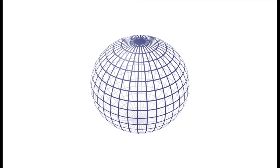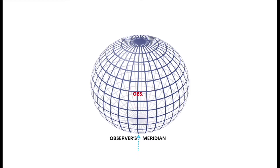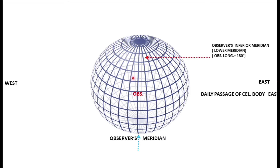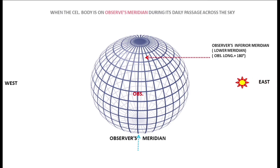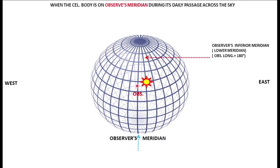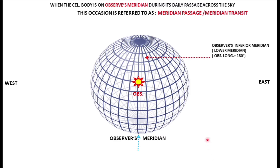We know that the Earth has got two motions — it revolves and rotates. Because of the rotation, we see that the body is rising from the east and setting to the west. We talked about the observer's meridian and observer's inferior meridian in previous topics. The inferior meridian is the observer's meridian plus 180 degrees — opposite the observer's meridian. Because of the rotation, the daily passage of the body is from east to west, and during this passage the body will come on the observer's meridian. This occasion when it comes on your meridian is referred to as meridian passage or meridian transit.